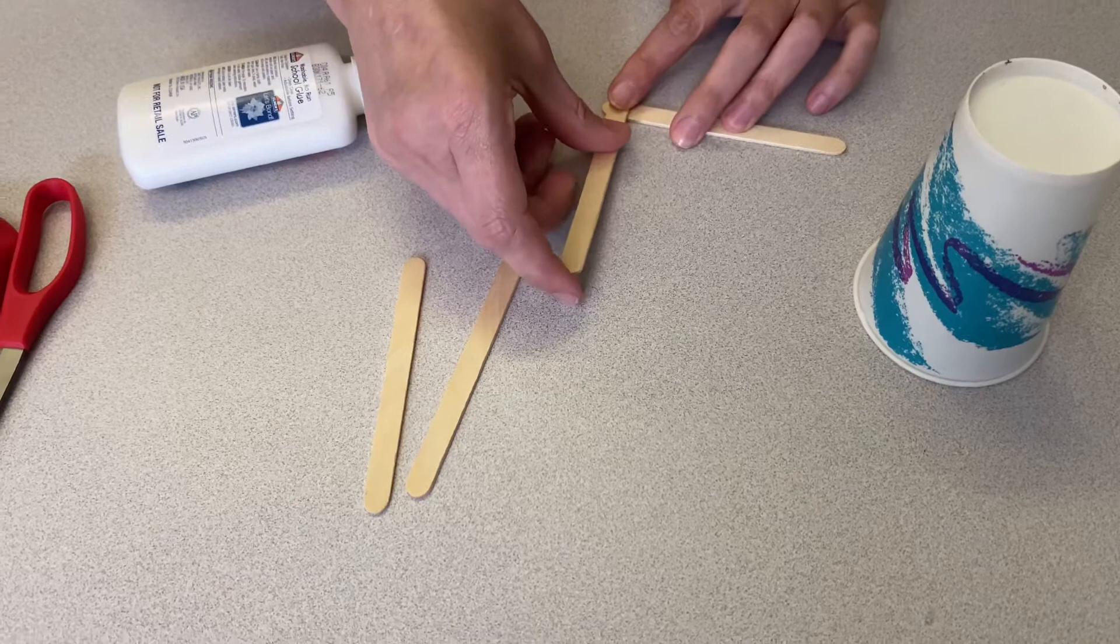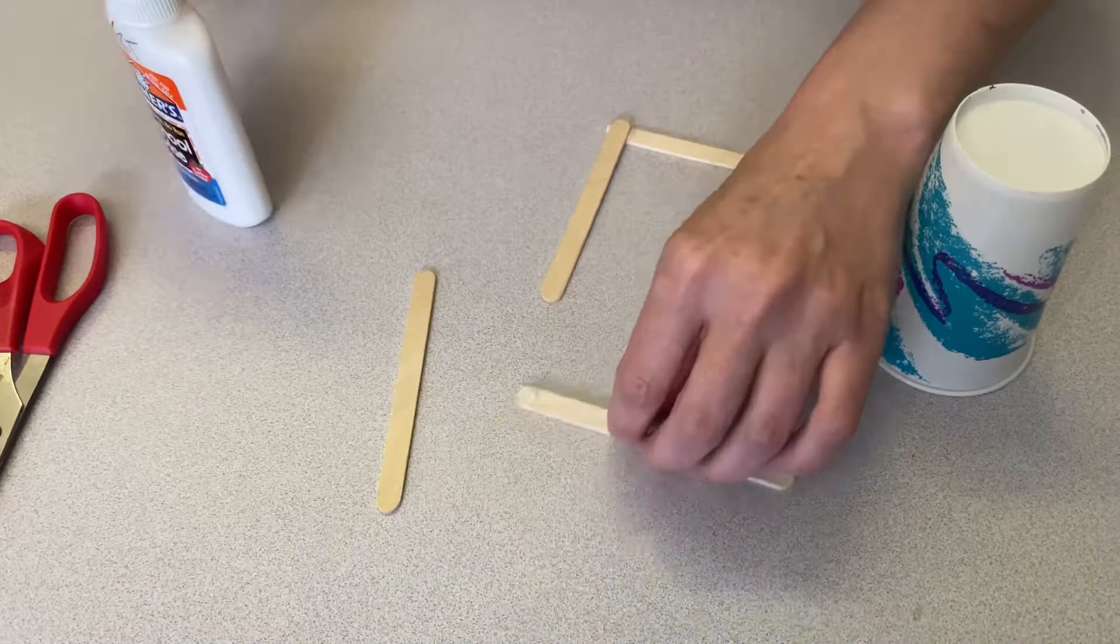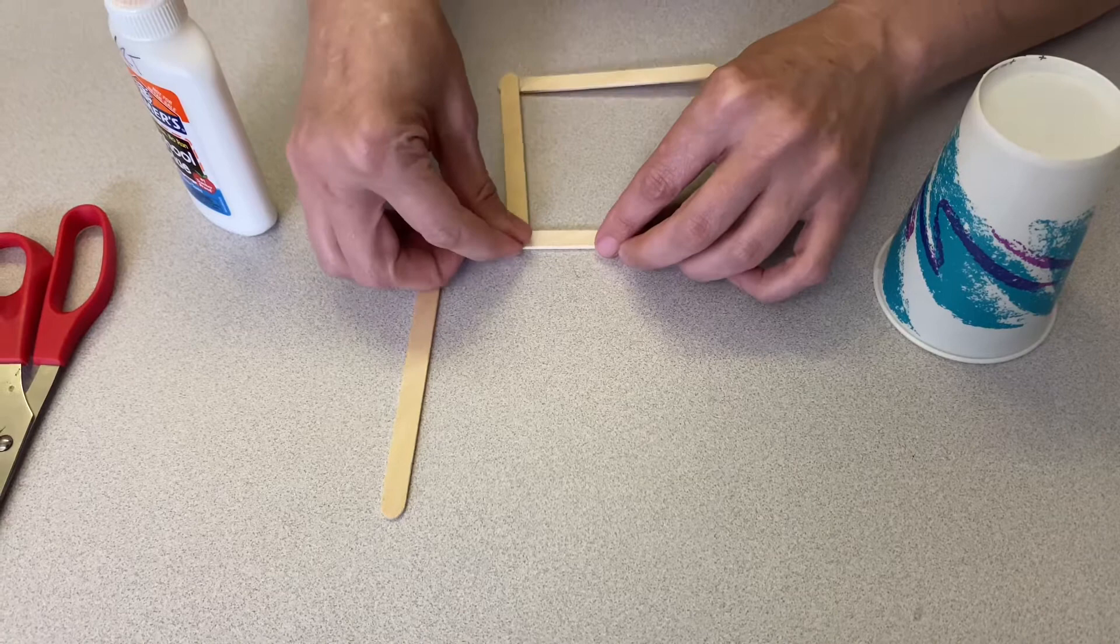We're basically going to make a U formation out of our popsicle sticks. Every place that the popsicle sticks are going to meet, we're just going to use a little bit of maybe a pea-sized amount of Elmer's glue and then we're going to press firmly in the position that we want.